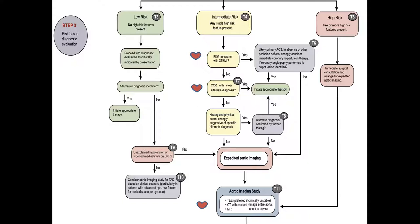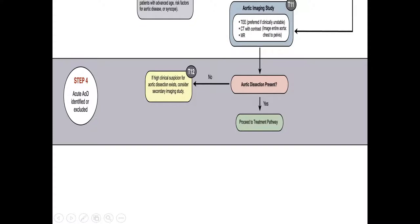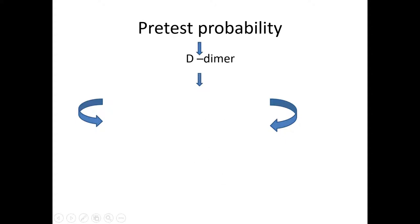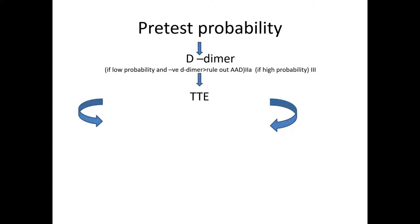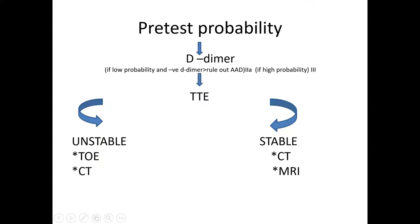If imaging confirms aortic dissection, we proceed to the treatment pathway. If not present, we look for other causes of chest pain. We also use pretest probability and D-dimer: if low probability and negative D-dimer, aortic dissection is ruled out. If high probability, we do not need a D-dimer — we proceed directly to transesophageal echo if unstable, or CT scan if stable.